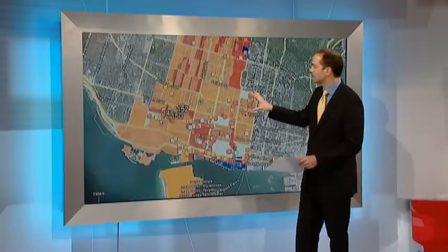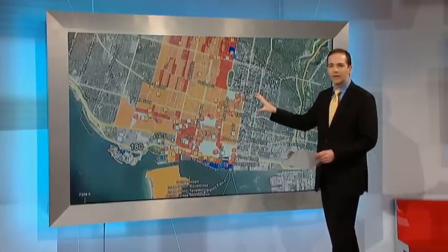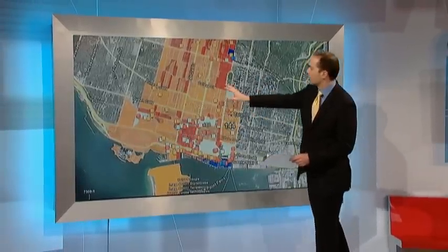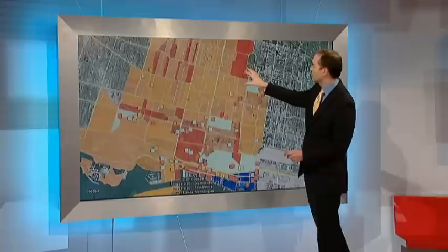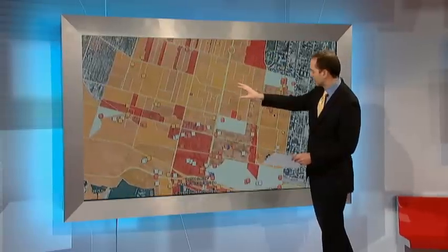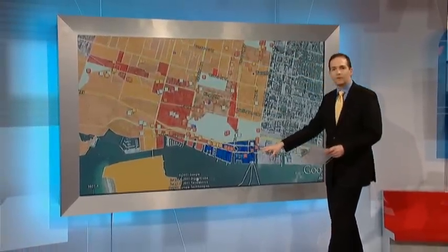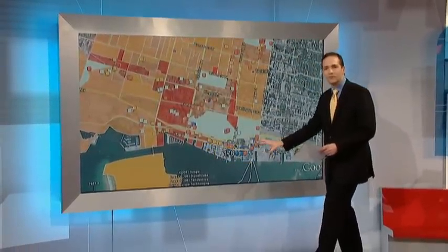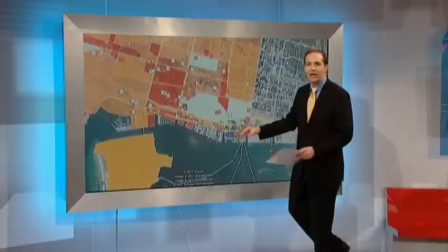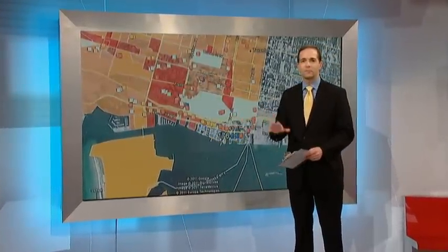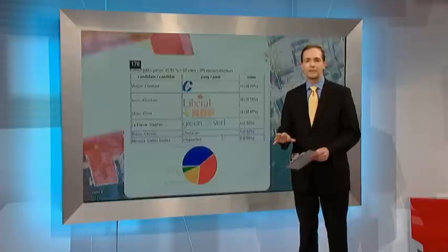People running campaigns have this information. This is another one — Trinity Spadina, where we are right now in downtown Toronto. You can see some orange, Olivia Chow's riding, some red areas, and down in the corner around Harbourfront some of the condos went Conservative blue. You can enter in your riding and scroll around the map to find your particular street and the polls around you.